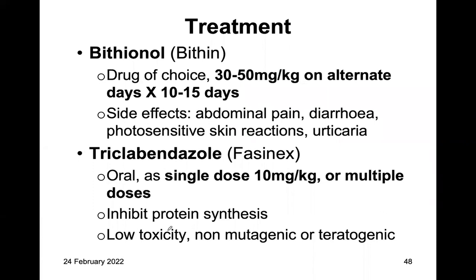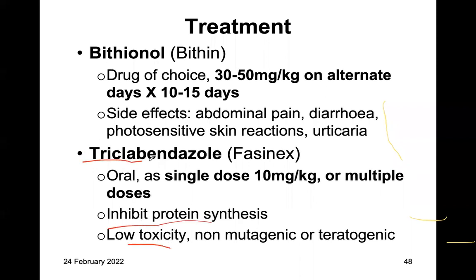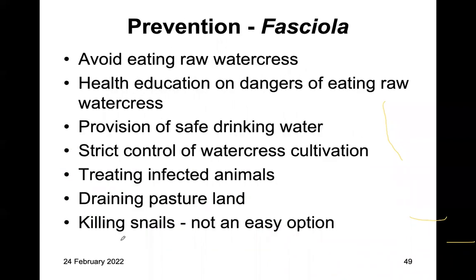The drug of choice is bithionol, and you could also use triclabendazole as a single dose. These drugs inhibit protein synthesis and have low toxicity — triclabendazole is usually preferred. Prevention: avoid eating raw watercress, health education, provision of safe drinking water, strict control of watercress cultivation, killing snails though it is not easy, draining pasture land, and treating infected animals especially sheep.